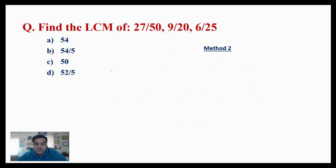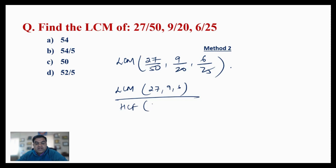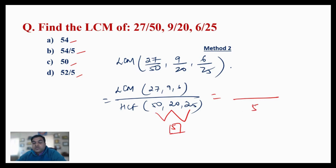Method 2: The question is the same — find the LCM of 27/50, 9/20, and 6/25. As we know, the answer will be LCM of 27, 9, and 6 divided by HCF of 50, 20, and 25. Instead of computing the LCM first, we look at the answer options A, B, C, D: 54, 54/5, 50, and something divided by 5. Since divided by 5 appears in the options, let's verify: HCF of 50, 20, 25 is indeed 5.